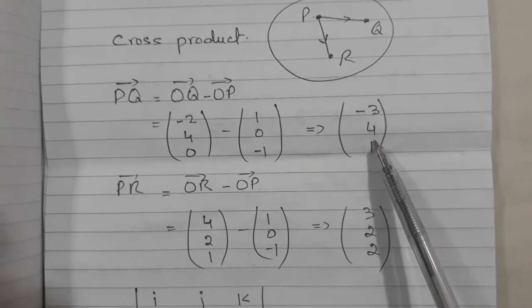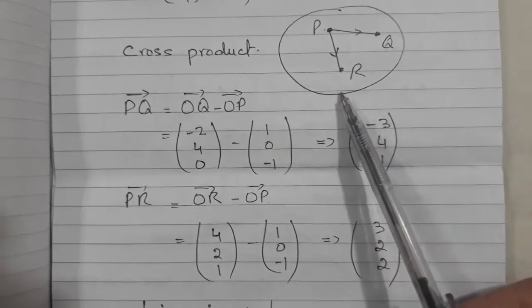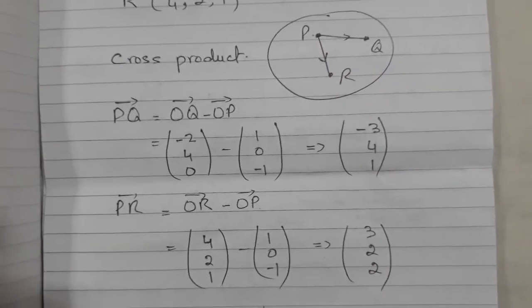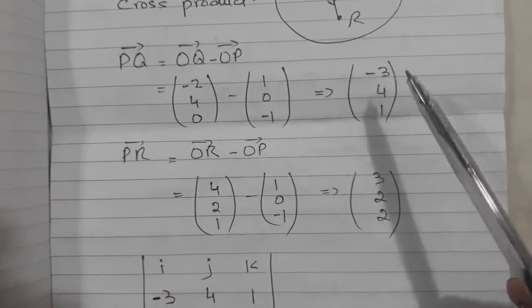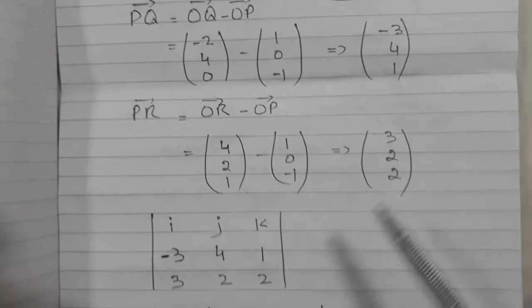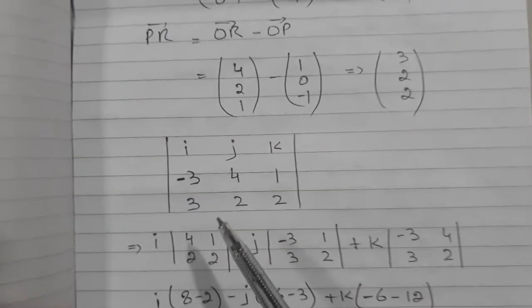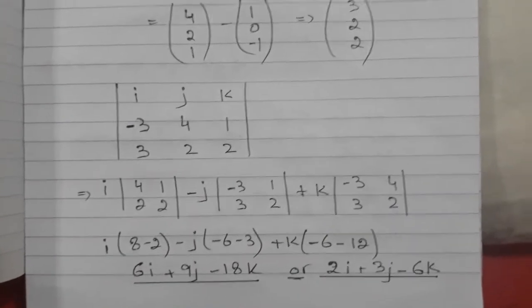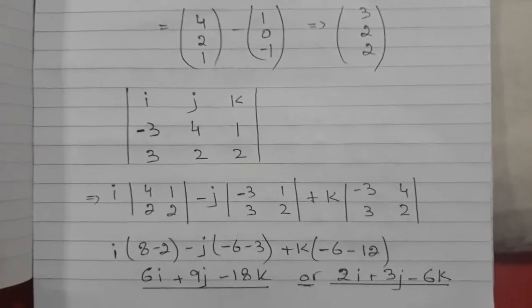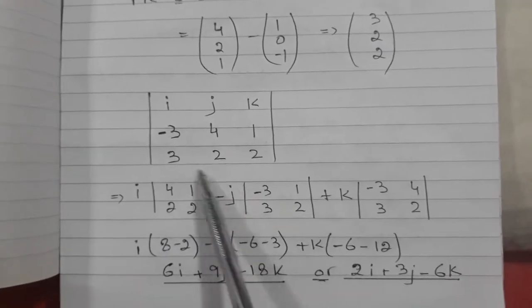So now I have vector PQ and PR means I know this direction. I know this direction and they are on the plane. They can be parallel to the plane coplanar. Anyway, so now I am applying cross product on these two vectors. Now cross product, how it is worked out, I am explaining here. We will not go into the detail of it much because that is not a concern. It is a long topic itself. So how do we apply it?